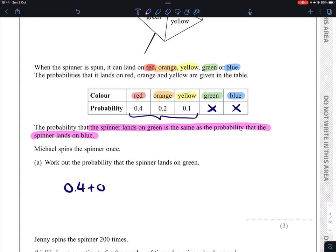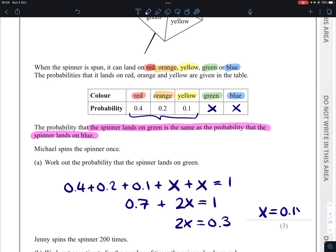So 0.4 for red plus 0.2 for orange, 0.1 for yellow, plus whatever green is, plus whatever blue is, equals one. Our equation simplifies to 0.7 plus 2X equals one. We take away 0.7 from both sides, which makes 2X equals 0.3. And if we halve that, X equals 0.15.